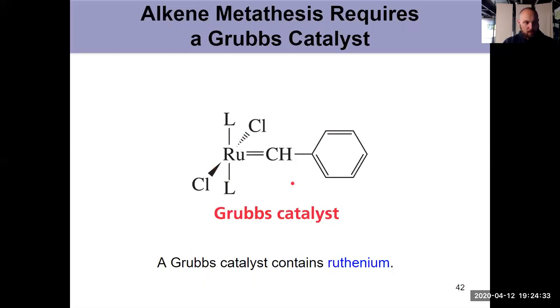And the reason for using the Grubbs catalysts for alkene metathesis is the fact that it's pretty tolerant. It will effectively react with a lot of our molecules without interrupting any of the other functional groups that are present.